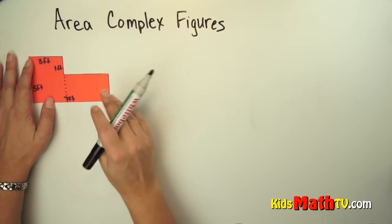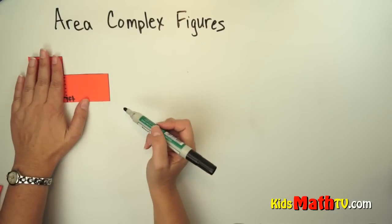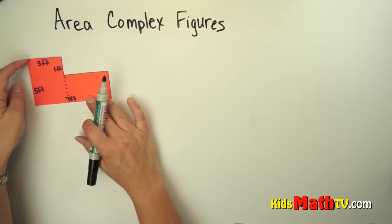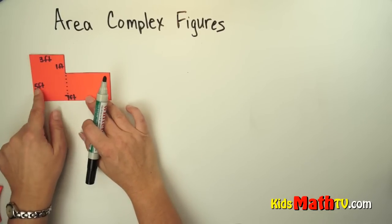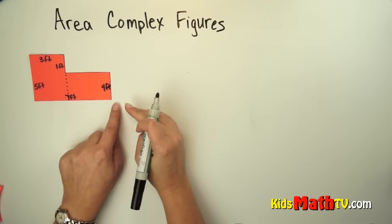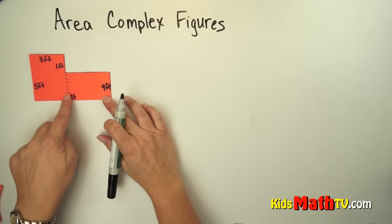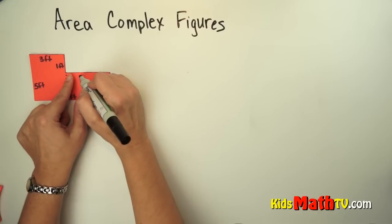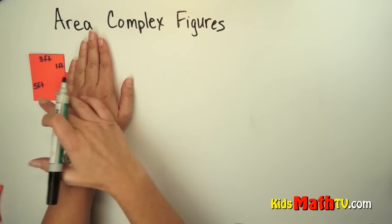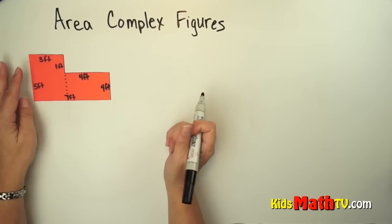We have one rectangle here and one rectangle here. I notice that I do not have the sides of my rectangle, so I need to figure that out. I know the total of this side is 5 feet and this is 1 foot, so 5 minus 1 gives me 4 feet here. Across the whole bottom is 7 feet and this is 3 feet, so 7 minus 3 gives me 4 feet here. I am going to find the area of this rectangle, then find the area of this rectangle, and combine them together.